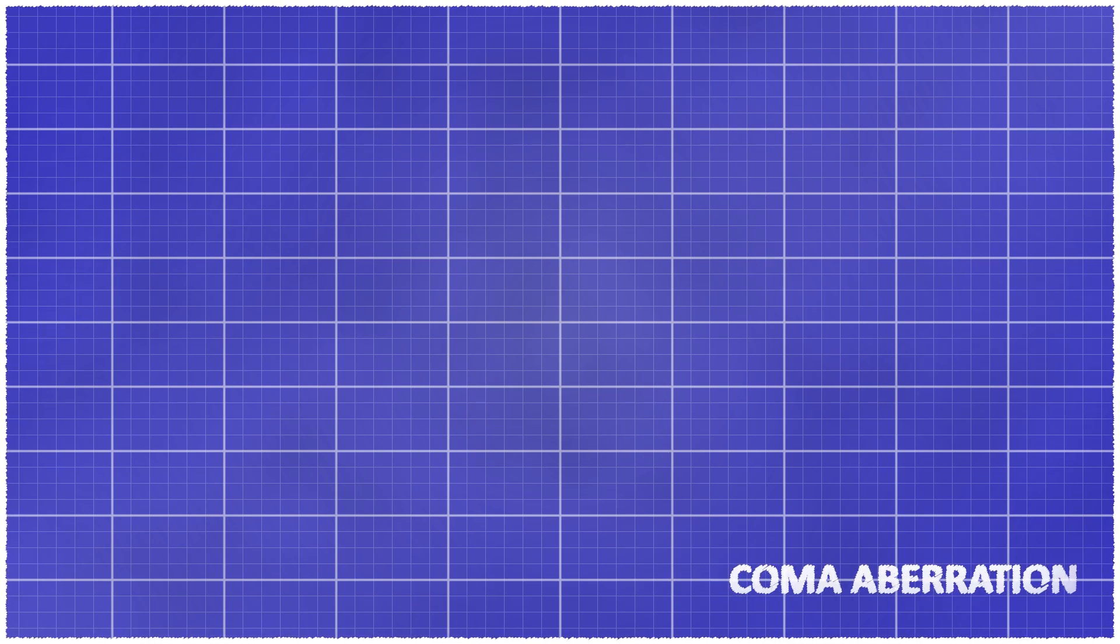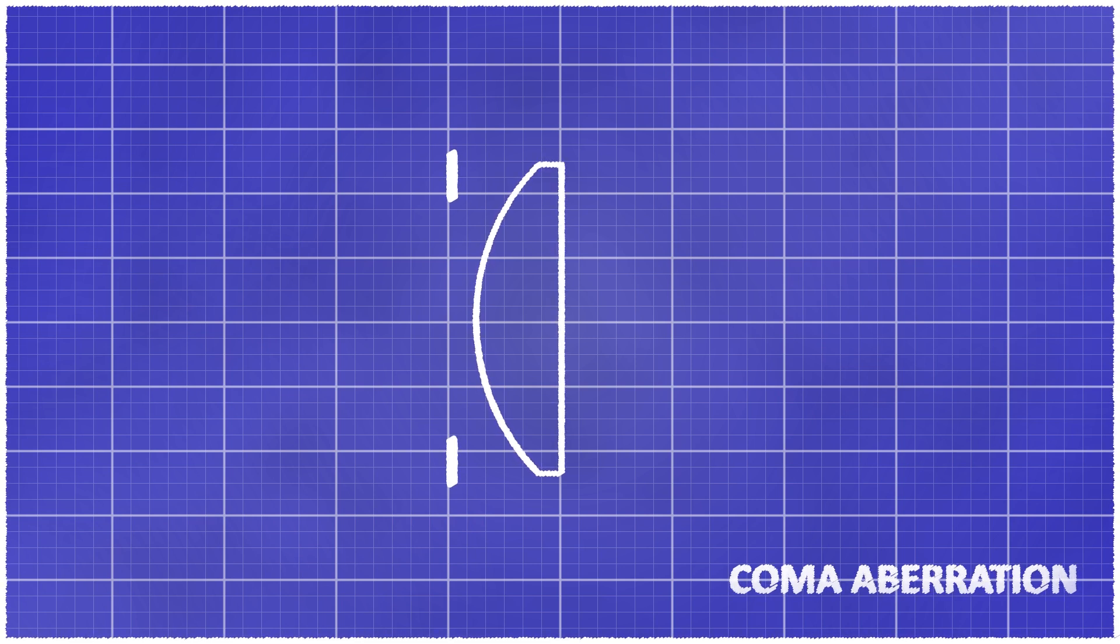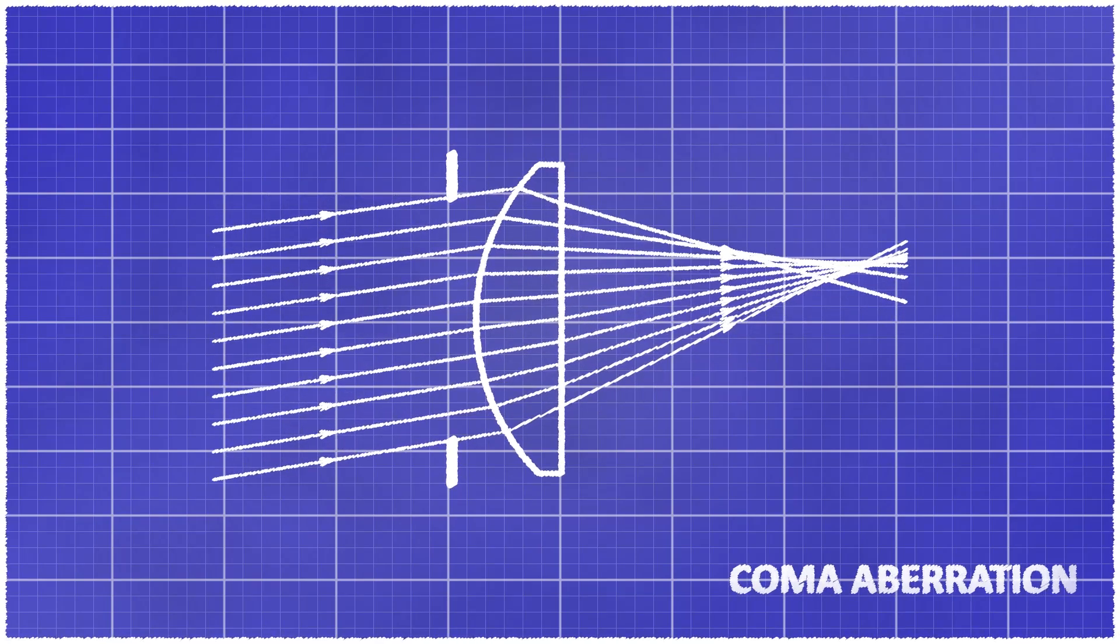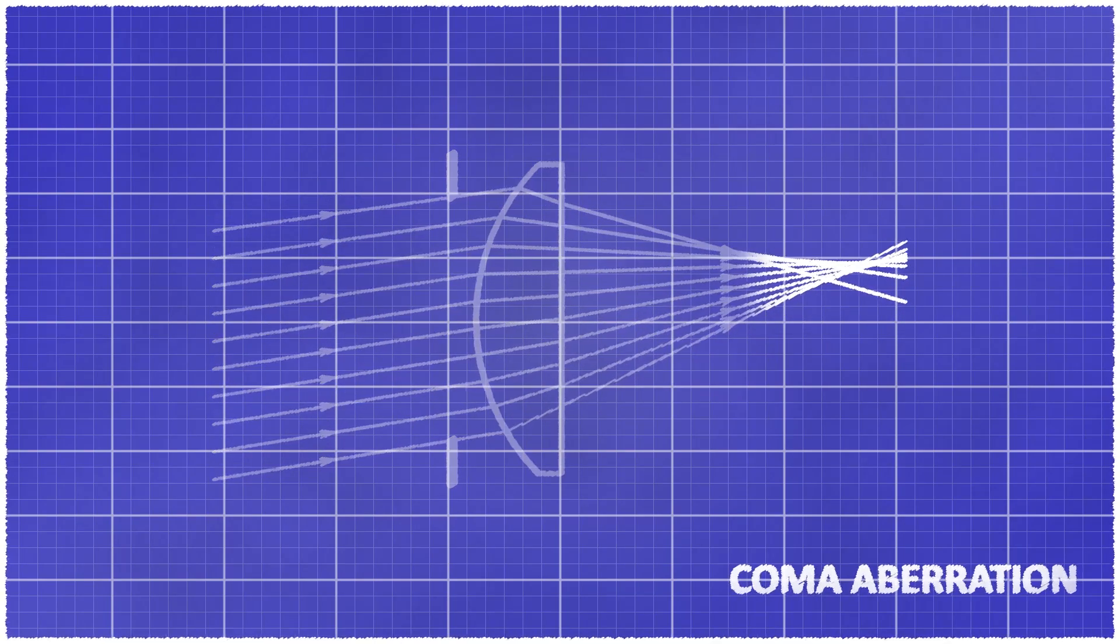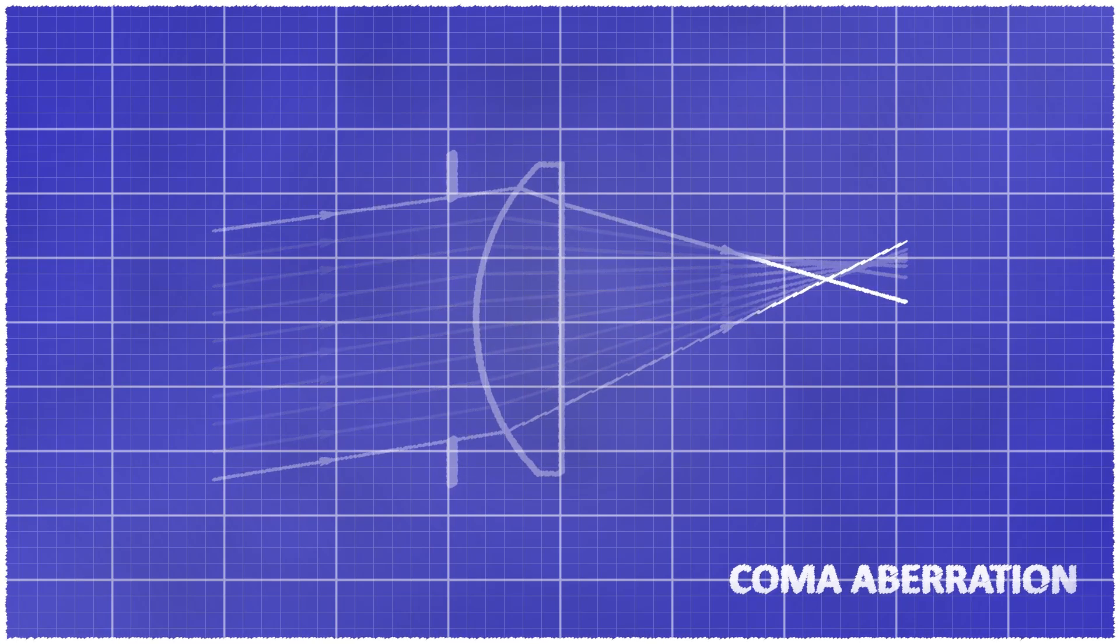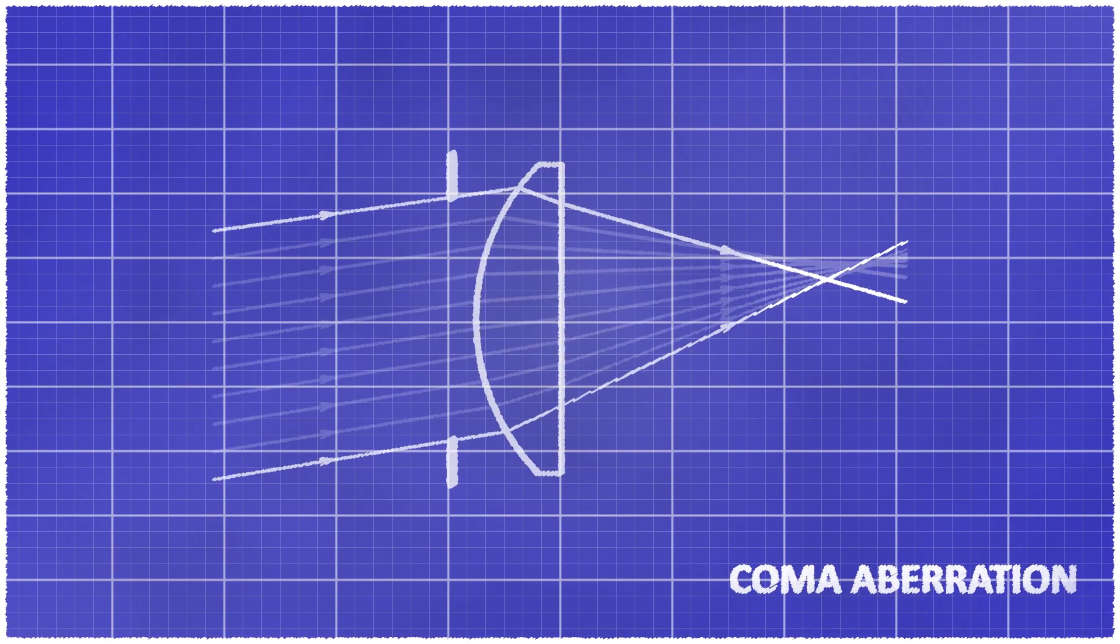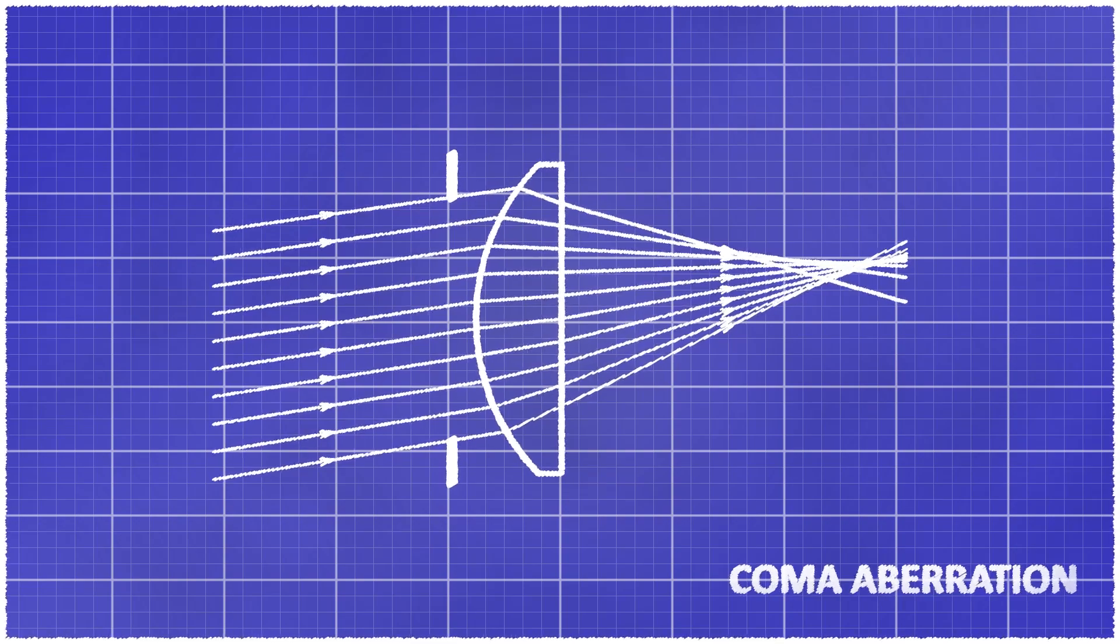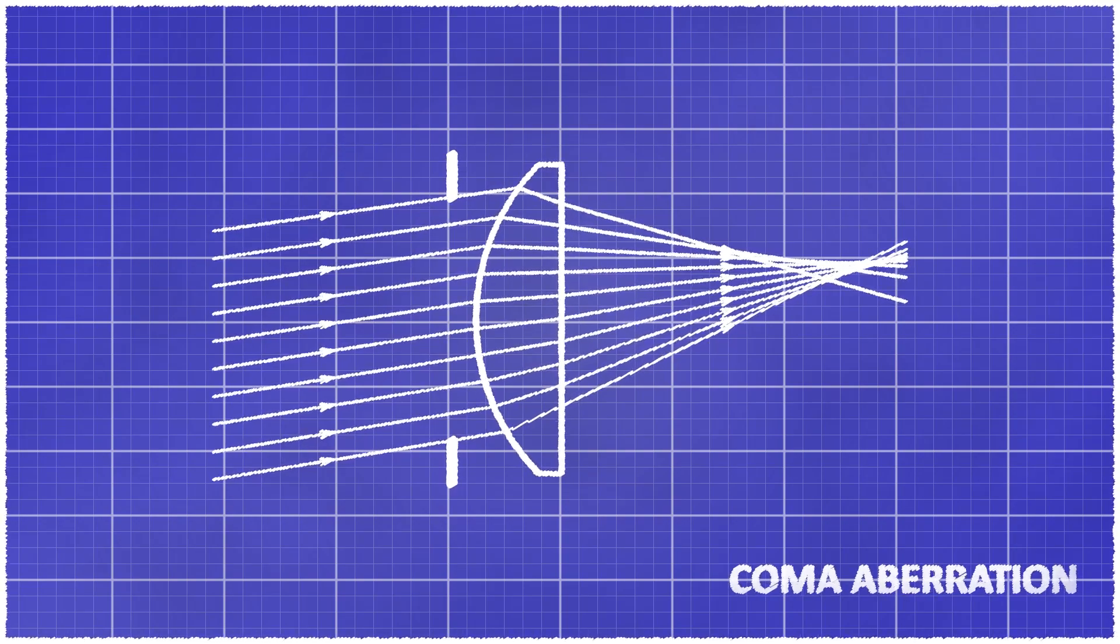Another type of aberration is coma. Let's take our previous lens back. I will also put an aperture in front of the lens. We know what happens for on-axis rays but let's see what happens for off-axis objects. Once again we see that the rays entering the lens at the center do not focus at the same position as the rays entering at the edge. But this time the effect is not along the optical axis but on the lateral axis. This results in a blurring that is the shape of a comet hence the name coma aberration.